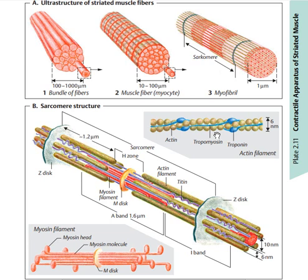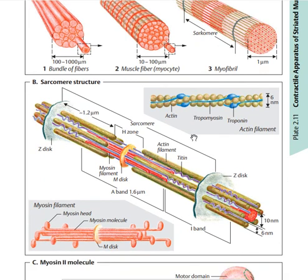Troponin I is going to be attached to the actin filament. Troponin C is going to be attached to the calcium ion. Troponin T is going to be attached to tropomyosin. Tropomyosin is going to be attached to the head of the myosin filament.